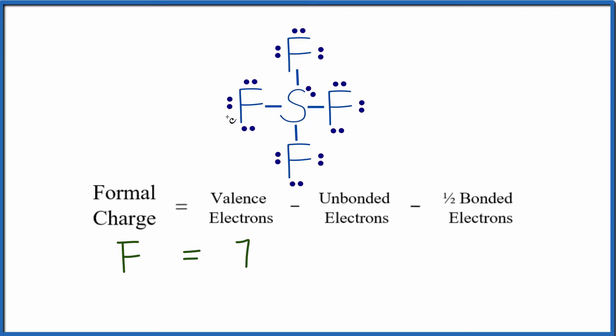Unbonded valence electrons, these are the electrons that aren't involved in a chemical bond. We have 2, 4, 6, so we have 6 unbonded. And then one half of the bonded valence electrons, we have the 2 here, this line represents a pair of valence electrons, so we have 2. And 7 minus 6 is 1, 1 minus 1, that's 0.